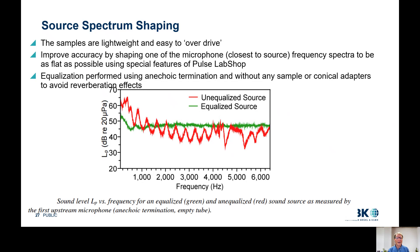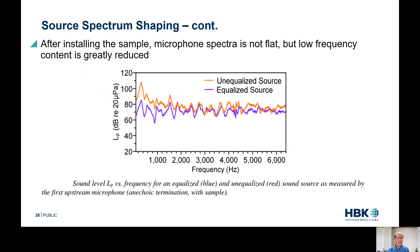This is something Kelby worked out with Jason to see if it could be done, and it worked rather well. It got rid of the problem of overdriving lightweight samples without having to turn the amplitude so far down that we couldn't make a high-frequency measurement. If you want to do this, send me a note — I have a PowerPoint on the exact steps for executing this in Pulse Lab Shop. After doing that, the measurement spectrum at microphone 1 with a sample installed is no longer flat, but at low frequencies — around 200 Hz — the amplitude is decreased by 20 dB, producing a superior measurement.